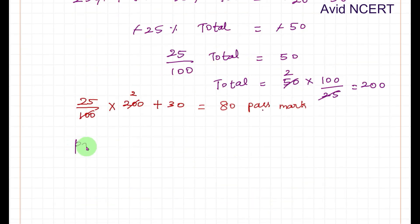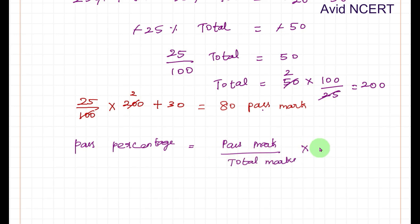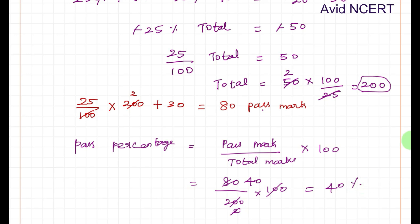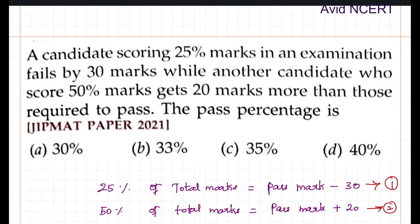To find the pass percentage, we calculate pass mark divided by total marks times 100, which is 80 divided by 200 times 100, giving 40 percent. So the pass percentage is 40 percent.